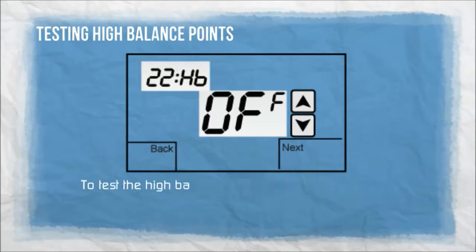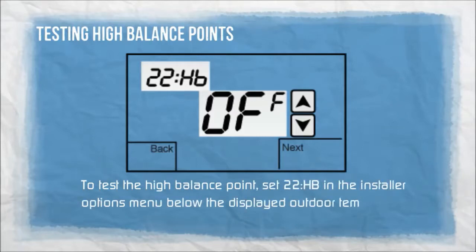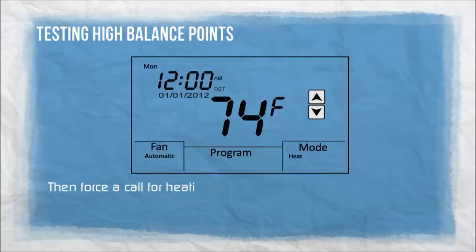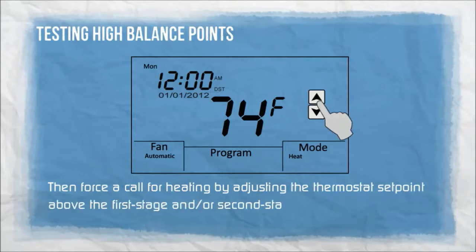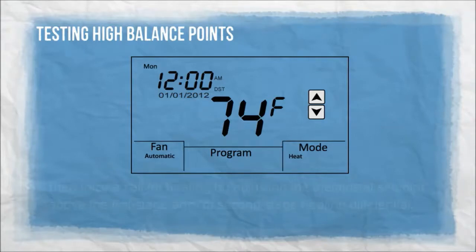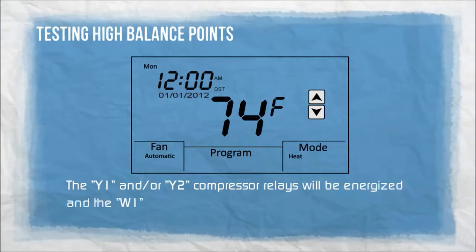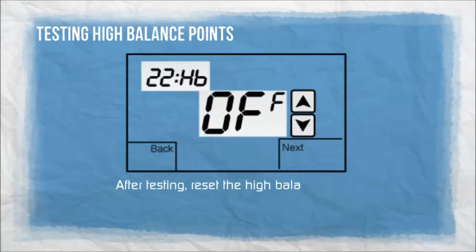To test the high balance point, set 22HB in the installer options menu below the displayed outdoor temperature. Then force a call for heating by adjusting the thermostat set point above the first stage and/or second stage heating differential. The Y1 and/or Y2 compressor relays will be energized and the W1 auxiliary heat relay will be bypassed. After testing, reset the high balance point temperature to a normal operating range.